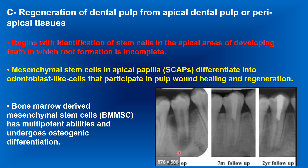In such a case, we will have stem cells regenerating the pulp, and at the same time, stem cells in the bone marrow forming bone and cementoblasts around the tooth.